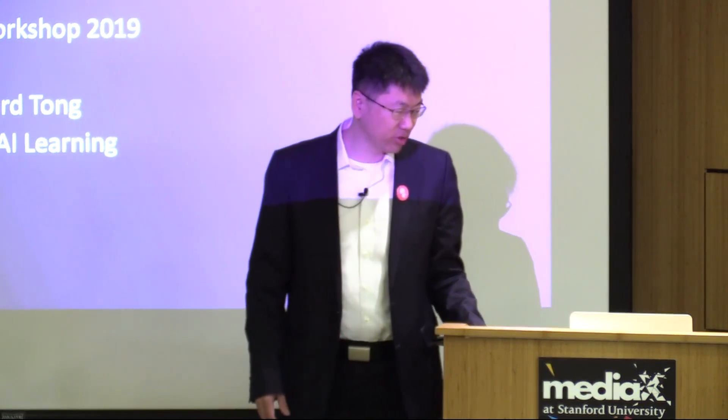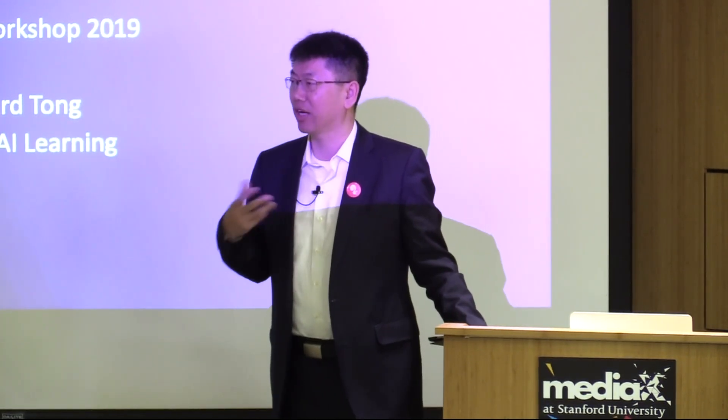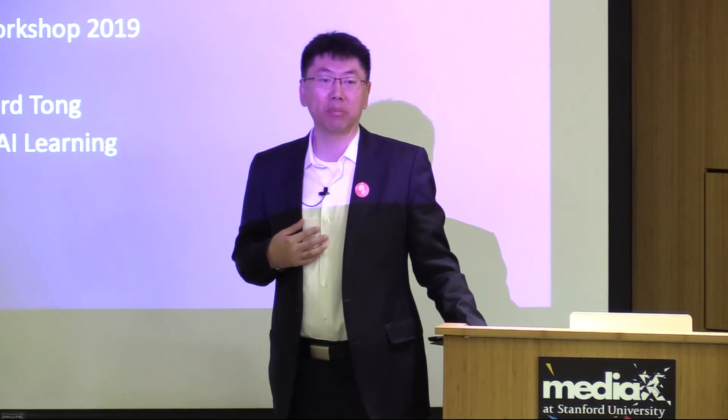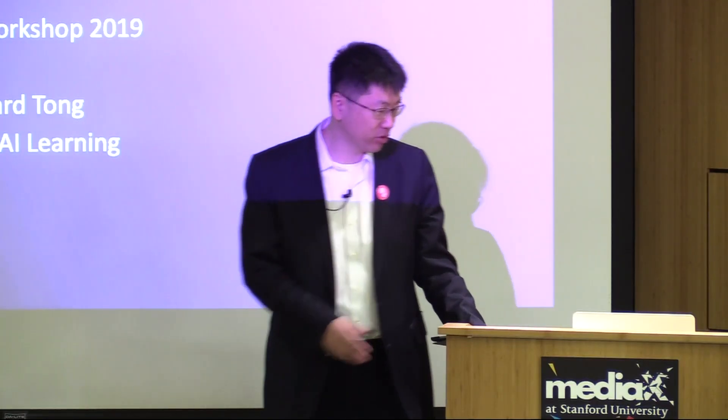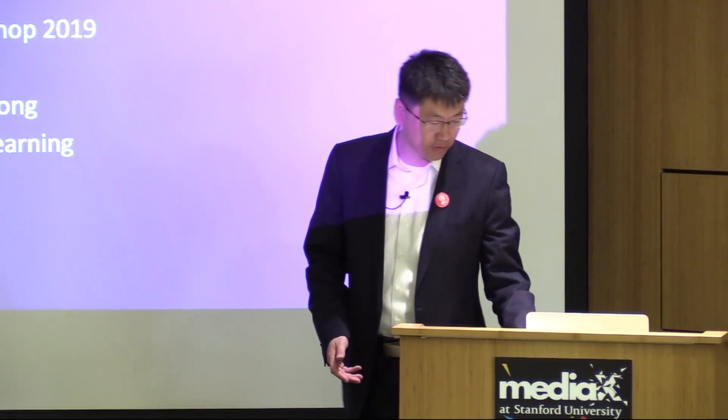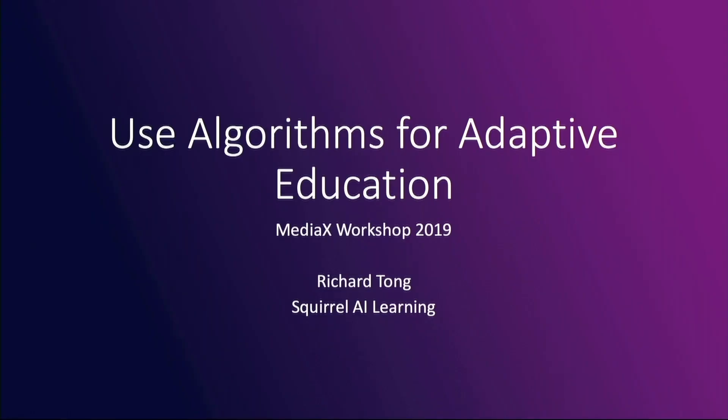I'm going to go into a little bit more detail than last time, because last time we were talking about our general approach. We're a company providing K-12 after-school education using AI as the primary differentiator. We use AI to diagnose students, recommend content, and recommend instructional sets for the student on the fly in real time, along with a human coach. The name for today's talk is about the algorithms for adaptive education.